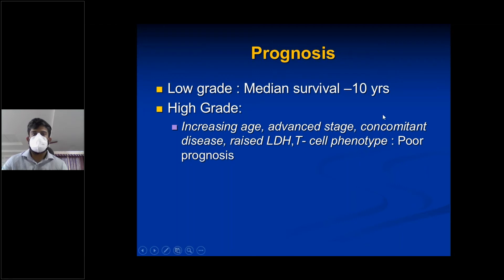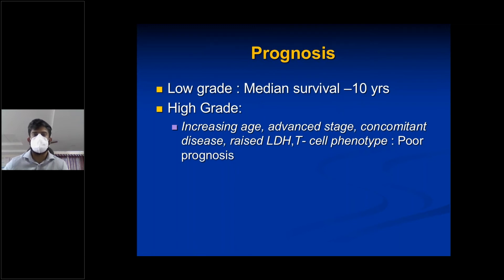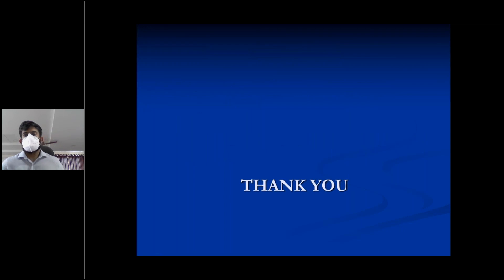Regarding prognosis: low-grade has median survival of 10 years. High-grade with advanced age, concomitant disease, raised LDH, and T-cell phenotype carries poor prognosis with survival less than 1 year. NHL must be treated promptly after diagnosis. That concludes today's class.